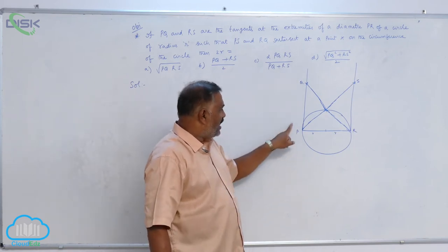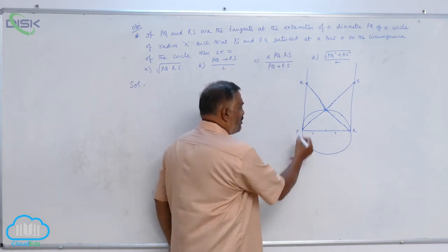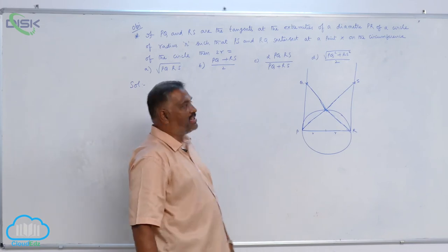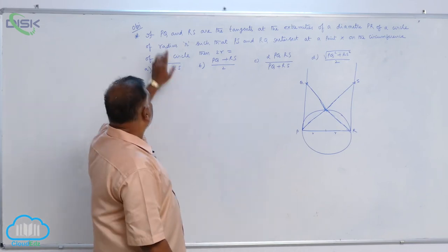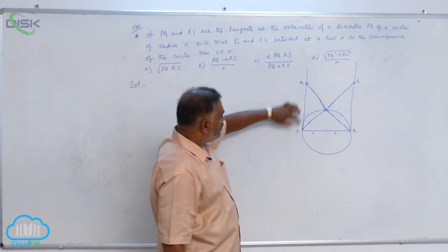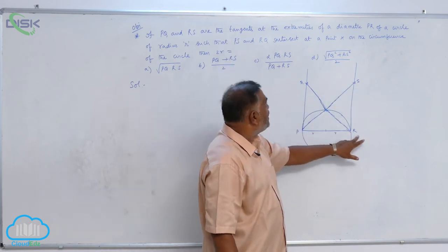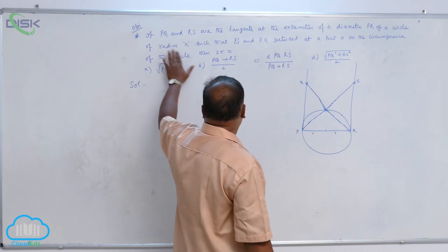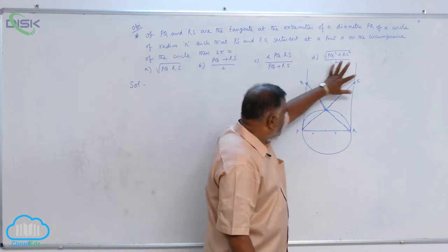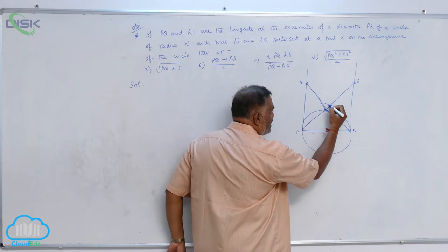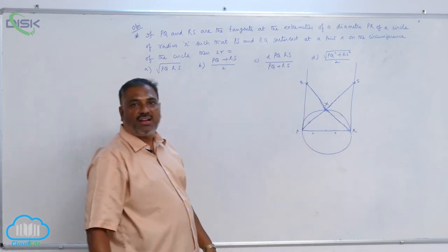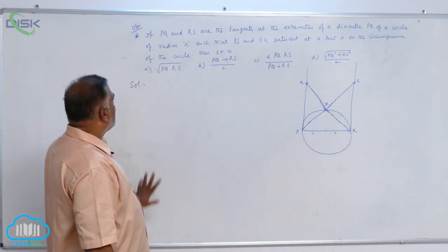This is the tangent and this is the radius. Automatically total angle will be 90 degrees. Check once again, PQ and RS are tangents at the extremities of the circumference of the circle.